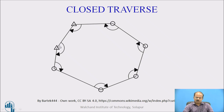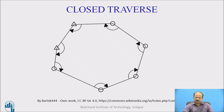The field procedure for theodolite traversing consists of measurement of included angles by repetition method at all stations, as well as measurement of magnetic bearing for each side of the traverse in forward and backward direction — the fore bearing and back bearing. In addition, we are also measuring the length of the sides of the traverse with utmost precision.